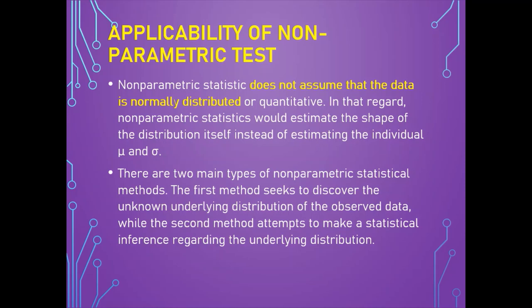Non-parametric statistics does not assume that data is normally distributed or quantitative. It estimates the shape of the distribution itself instead of estimating individual mu and sigma (mean and standard deviation). There are two main types of non-parametric statistical methods: the first seeks to discover the unknown underlying distribution of observed data, while the second attempts to make a statistical inference regarding the underlying distribution.